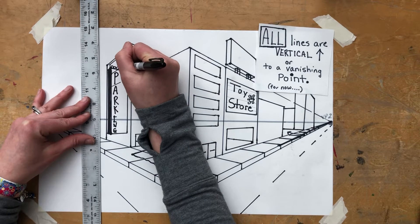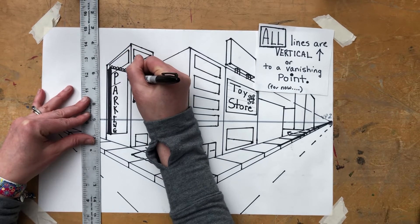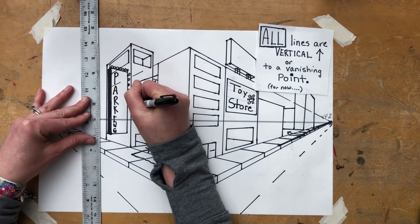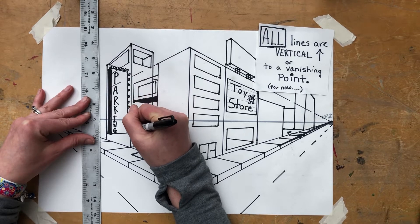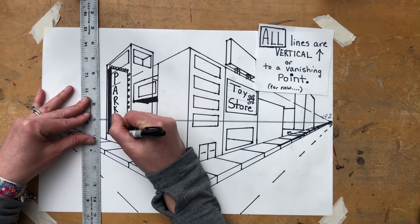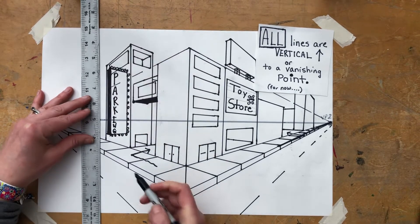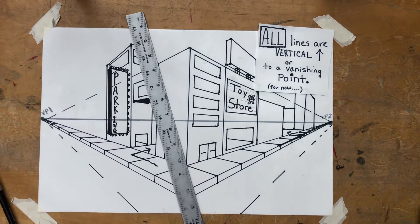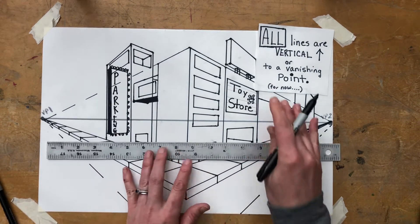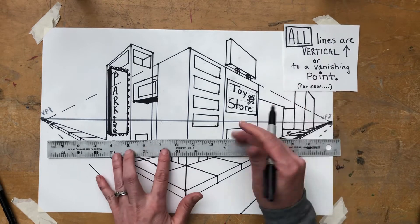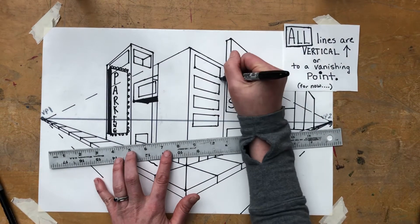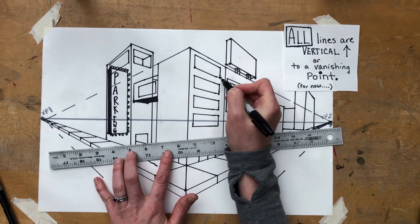That you can fill in later to make it sparkle and so on. And that would be your sign that sticks off the building. Anytime you want something that sticks off the building, again, go to the opposite vanishing point.